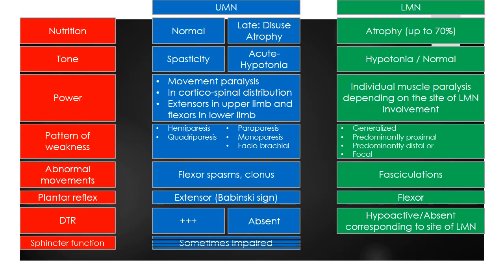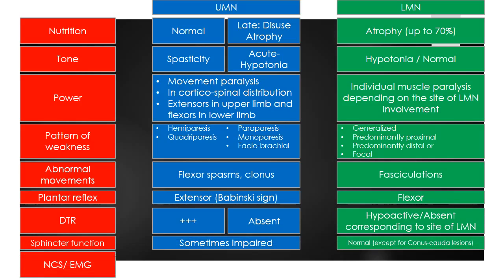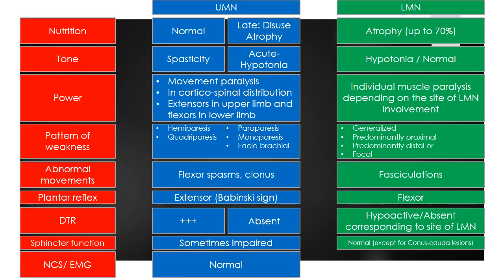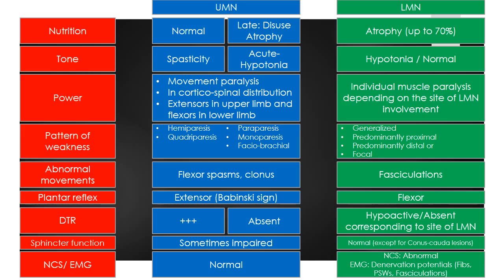Sphincter function is sometimes impaired in UMN lesions, but usually normal in LMN lesions except for conus-cauda lesions. Nerve conduction study and electromyography is normal in UMN lesions and abnormal in LMN lesions, where EMG may show denervation potentials in the form of fibrillations, positive sharp waves, or fasciculations.